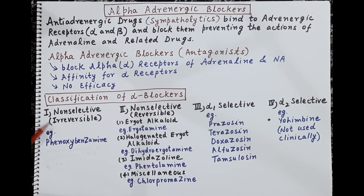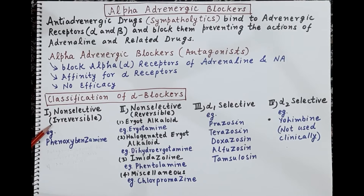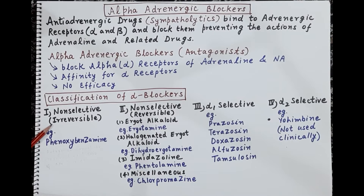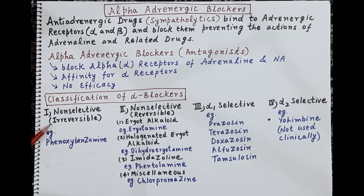These are the non-selective irreversible alpha blockers. Once they bind to alpha-1 and alpha-2, they antagonize the action of adrenaline, and this antagonism cannot be reversed by increasing the concentration of adrenaline. Therefore, these are called irreversible non-selective alpha blockers. The example is phenoxybenzamine.